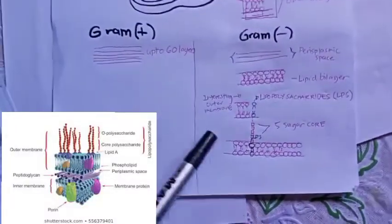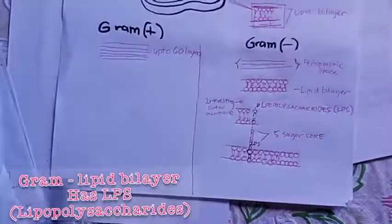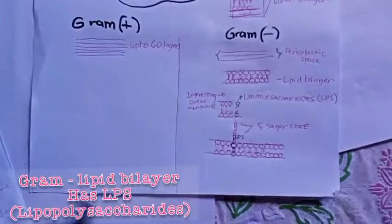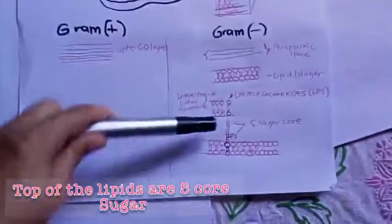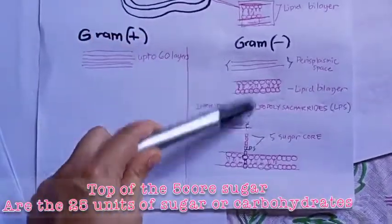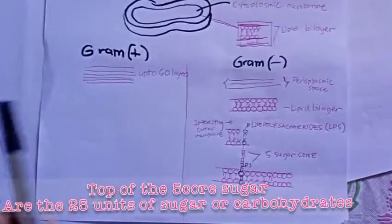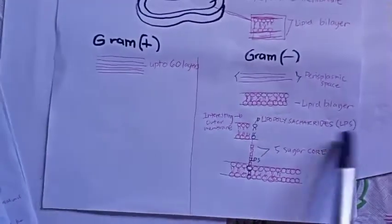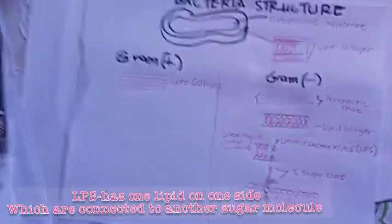This outer lipid bilayer consists of LPS, or lipopolysaccharides. Above the LPS is a 5-sugar core, and above that are 25 units of sugar or carbohydrates. The LPS has lipids on one side connected by a sugar molecule.